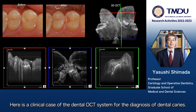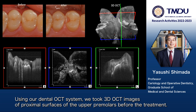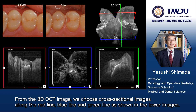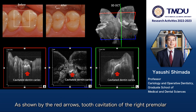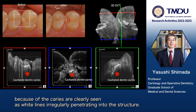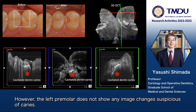Here is a clinical case of the dental OCT system for the diagnosis of dental caries. Using our dental OCT system, we took 3D OCT images of proximal surfaces of the upper premolars before treatment. From the 3D OCT image, we chose cross-sectional images along the red line, blue line, and green line as shown in the lower images. As shown by the red arrows, tooth cavitation of the right premolar due to caries is clearly seen as white lines irregularly penetrating into the structure. However, the left premolar does not show any image changes suspicious of caries.